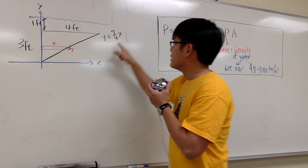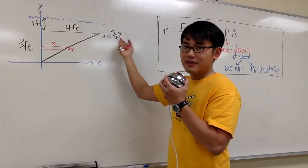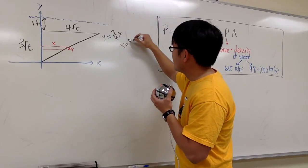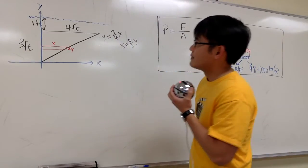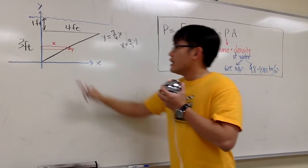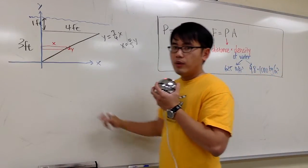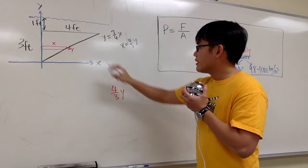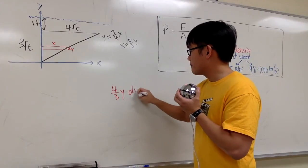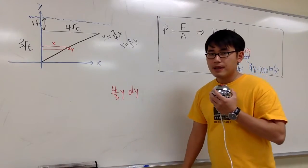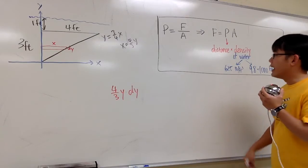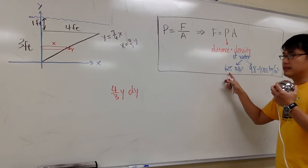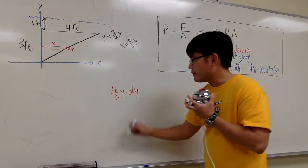For the x, I have to isolate x from this equation. In other words, x will be (4/3)y. That's all I need. The area of this rectangle will be x — which is (4/3)y — times dy. That pretty much takes care of the area part. Now for the density: it's water and we're using feet, so we multiply this by 62.5.